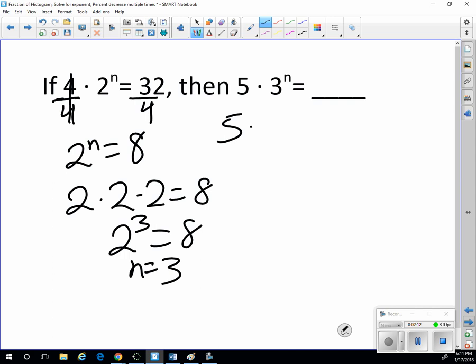So if n is 3, then we have 5 times 3 to the 3rd. 3 to the 3rd means 3 times 3 times 3, which is 27. Because 3 times 3 is 9 times 3 is 27. 5 times 27. Well, 5 times 20 would be 100. 5 times 7 is 35. Add those together and you get 135.